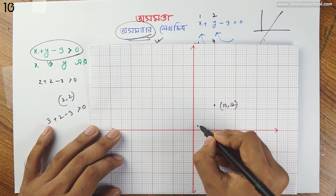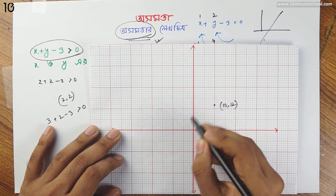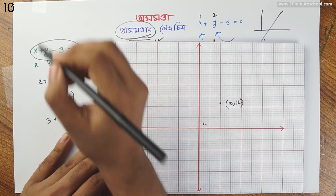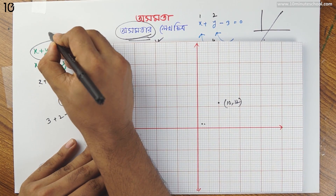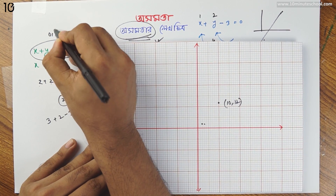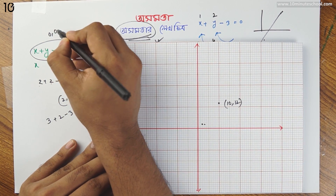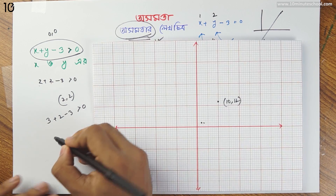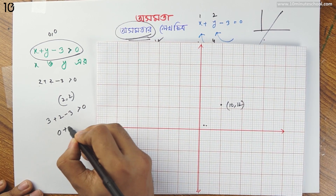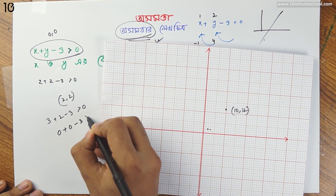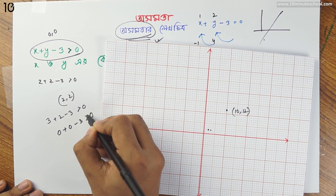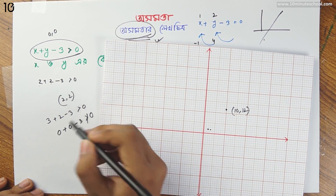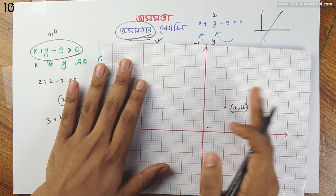The point (0, 0): 0 plus 0 minus 3 is not greater than 0.